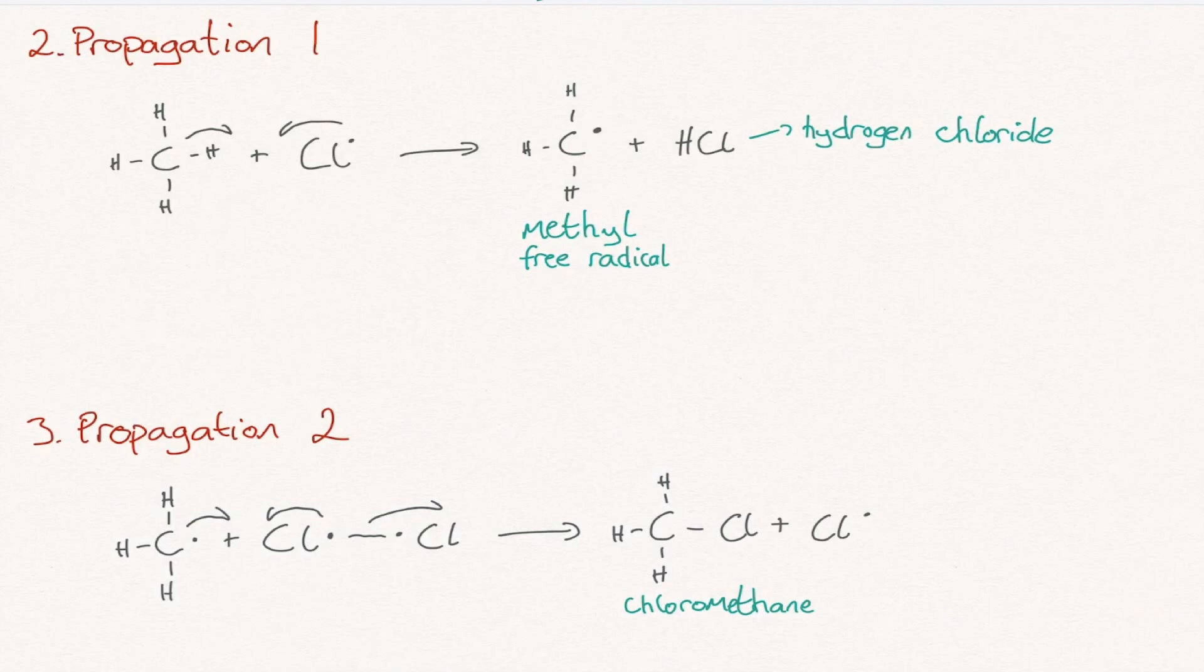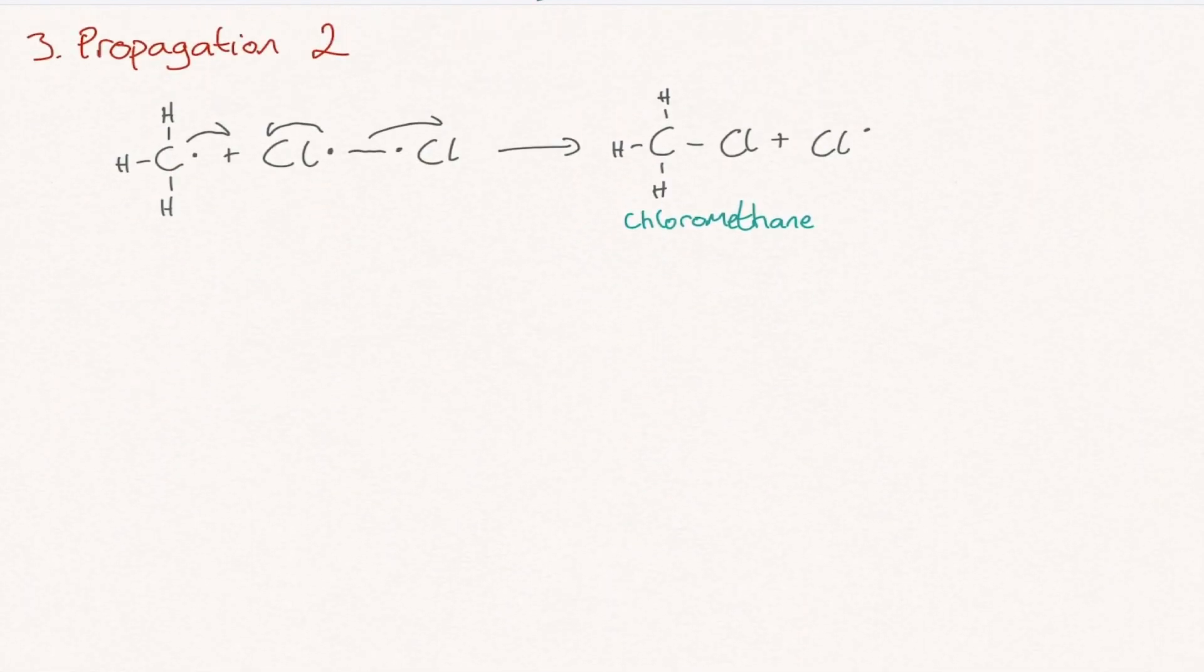Steps 2 and 3 are classed as propagation stages because they keep the chain of reaction in operation to form chloromethane.